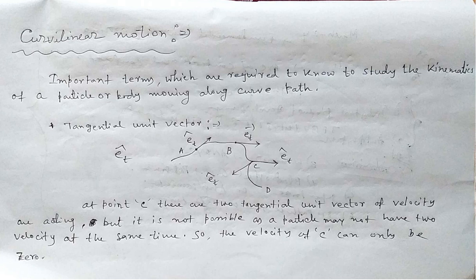The first term is the tangential unit vector. A unit vector has magnitude 1 and only possesses direction along a specific given direction. So the tangential unit vector acts along the direction of the tangent to a curve. Here we have considered a curved path through which a particle is moving, and we have considered certain positions a, b, c, d. At point a, its velocity is along a direction which can be shown by a unit vector acting in that direction.